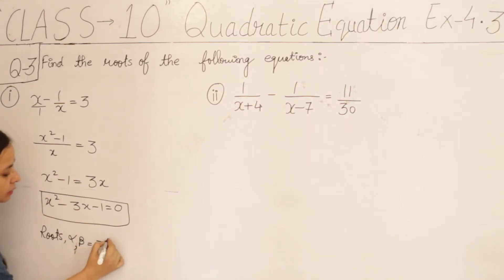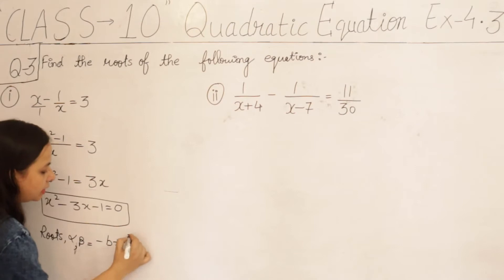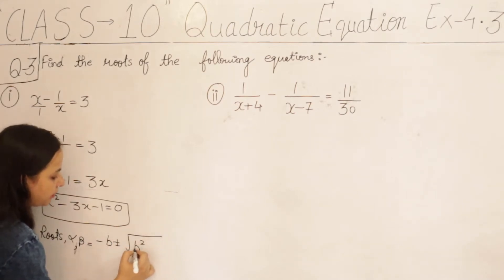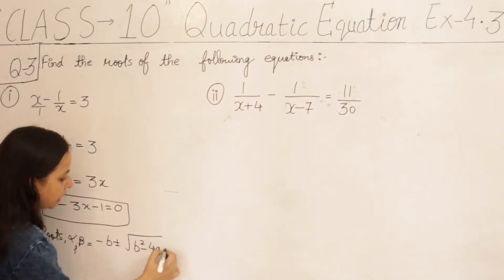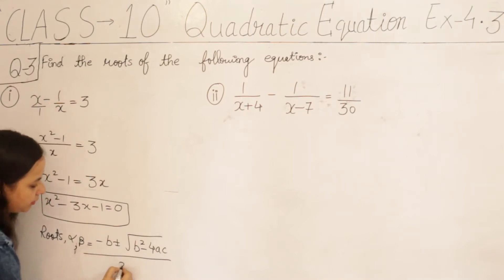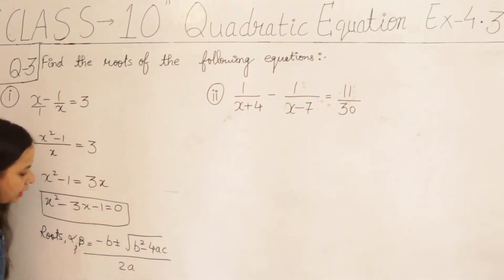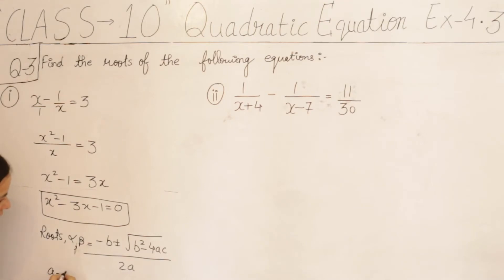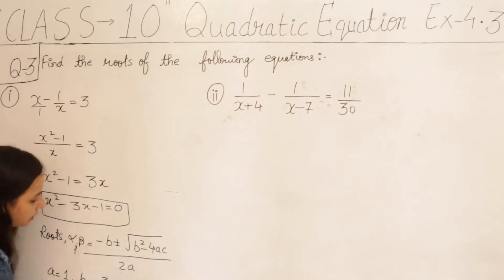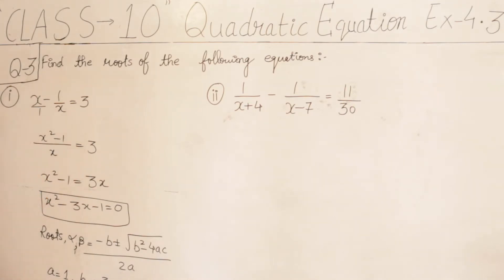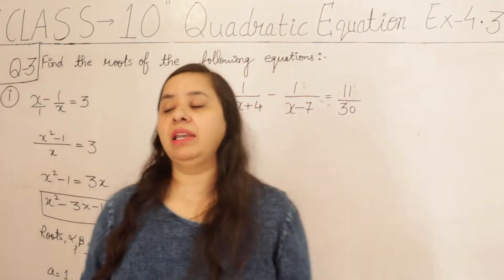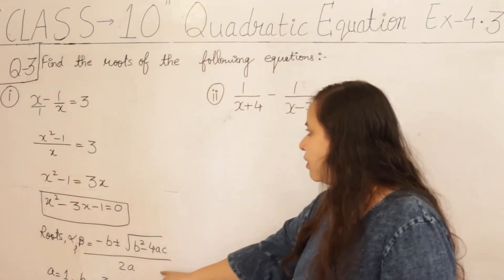Alpha and beta are equal to minus b plus or minus under root of b squared minus 4ac, upon 2a. Now for this equation, the value of a is 1, the value of b is minus 3, and the value of c is minus 1. So these are our a, b, c values and we can place them in the formula.